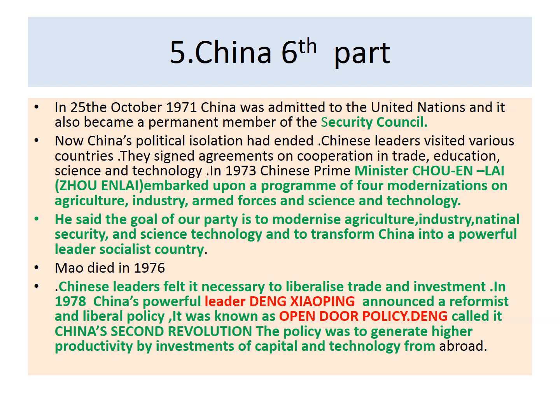China's political isolation ended. Chinese leaders visited various countries and signed agreements on cooperation in trade, education, science and technology. In 1973, Chinese Prime Minister Zhou Enlai embarked upon a program of Four Modernizations — of agriculture, industry, armed forces and science and technology. He stated that the goal of the party was to modernize agriculture, industry, national security and science and technology, and to transform China into a powerful socialist country.